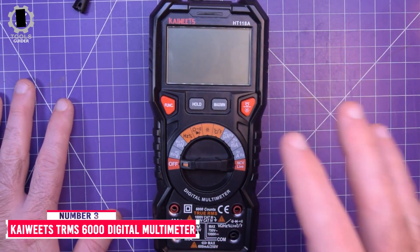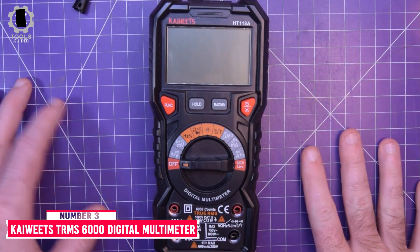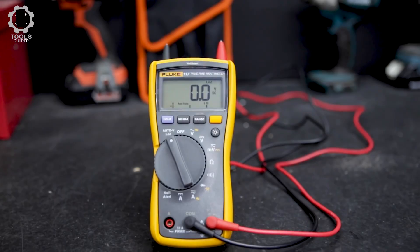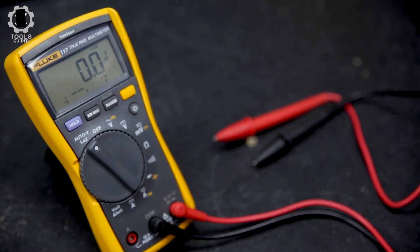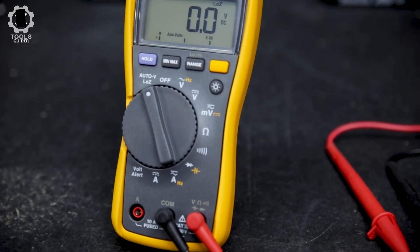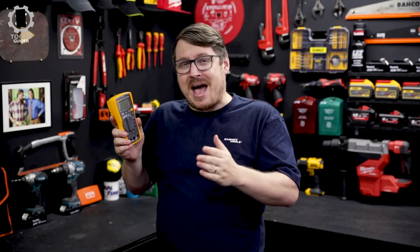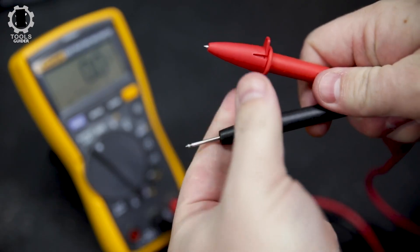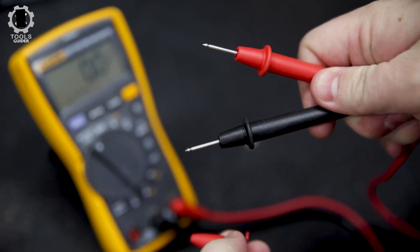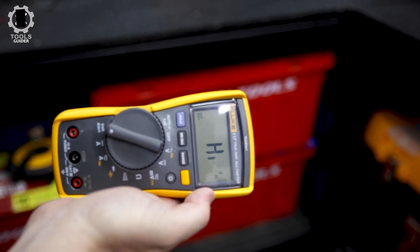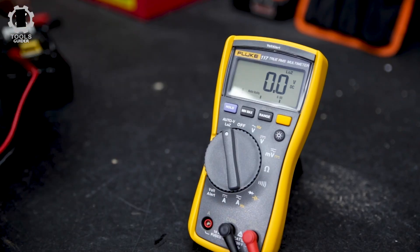Number 3. KAIWEETS TRMS 6000 Digital Multimeter. The KAIWEETS TRMS 6000 Digital Multimeter measures up to 600V AC-DC voltage, 10A AC-DC and 60 megaohms resistance. The electrical tester also tests temperature, capacitance, frequency, duty cycle, wire on-off, and test diodes in continuity. Switch the dial to the function you need, and the LED lights on the jacks will shine accordingly. Plug-in the leads is easy. Autoranging saves you the hassle of having to know which range of value.